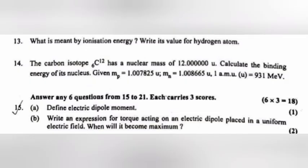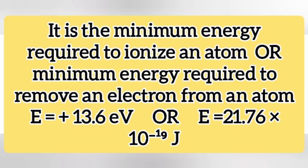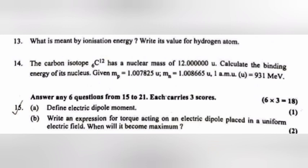Question 13: What is meant by ionization energy? Write its value for hydrogen atom. Answer: It is the minimum energy required to ionize an atom or minimum energy required to remove an electron from an atom. E is equal to plus 13.6 eV or E is equal to 21.76 into 10 raise to minus 19 joule.